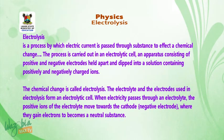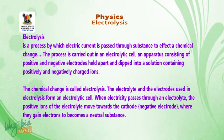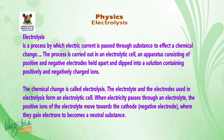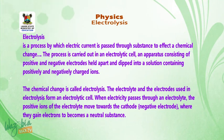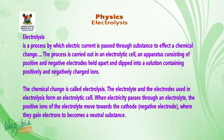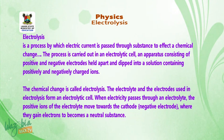Electrolysis is a process by which electric current is passed through a substance to effect a chemical change. The process is carried out in an electrolytic cell — an apparatus consisting of positive and negative electrodes held apart and dipped into a solution containing positively and negatively charged ions. The electrolyte and the electrode used in electrolysis form an electrolytic cell.